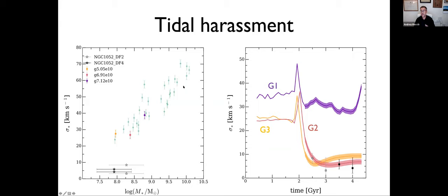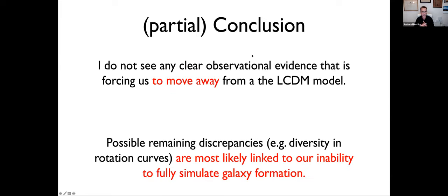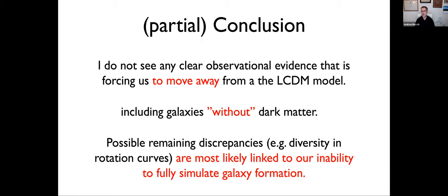This problem — galaxies without dark matter — is also solved through a combination of galaxy formation and tidal interaction. When isolated galaxies are placed onto an orbit around a massive neighbor, the velocity dispersion drops from 25–30 km/s down to the order of 5 km/s observed by van Dokkum.